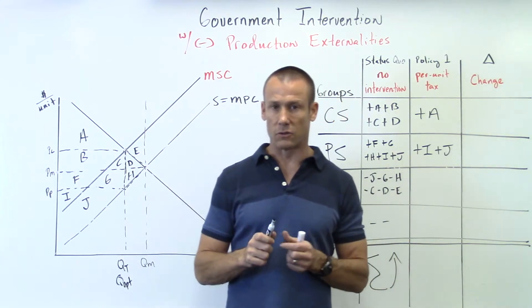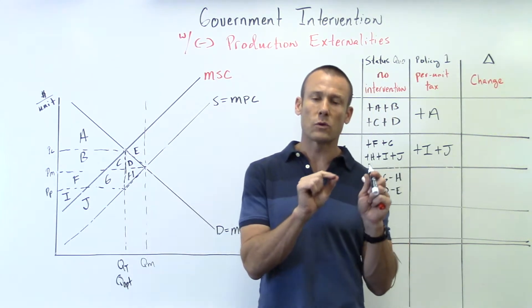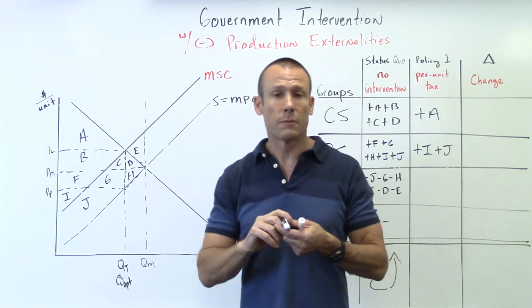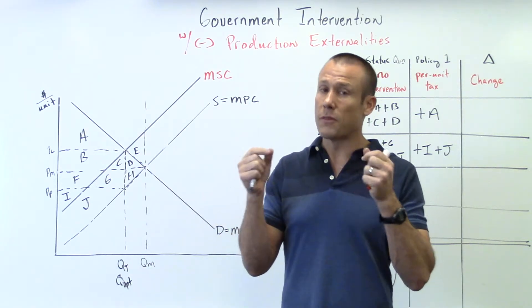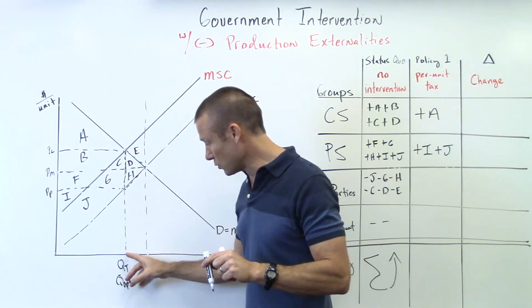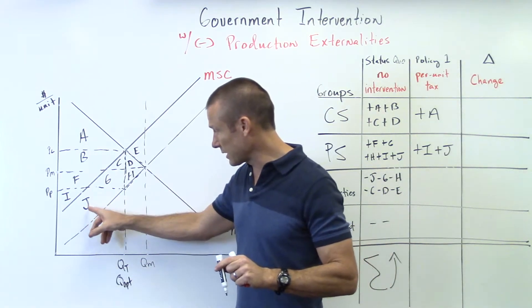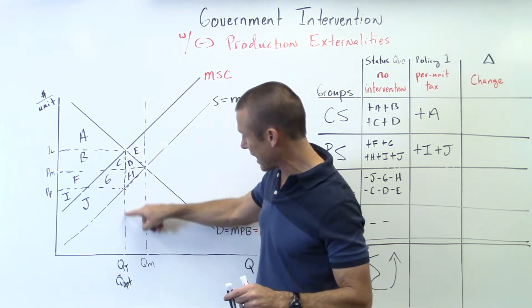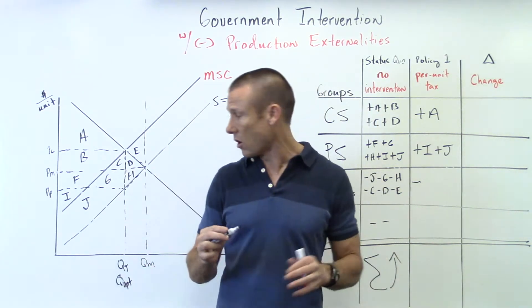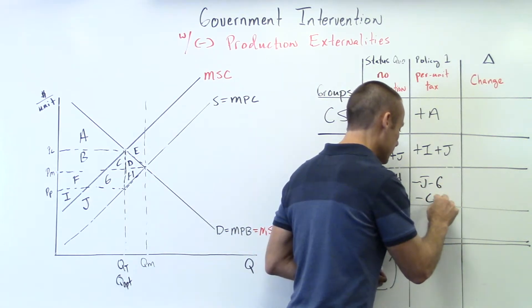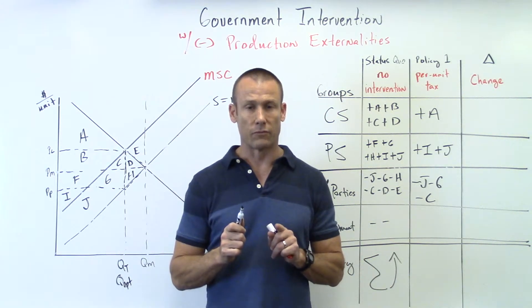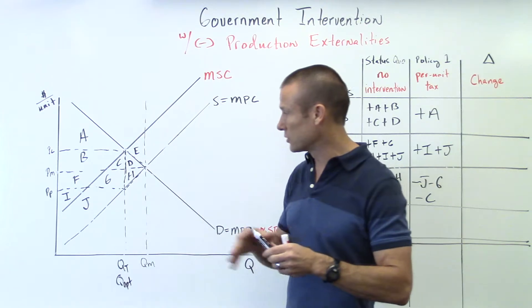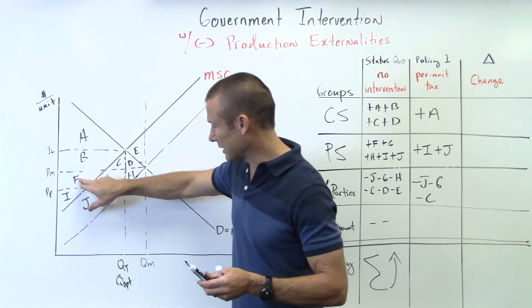Third parties are still going to be impacted. Yes, we're doing a tax and putting the burden onto producers and consumers, but if this is, say, pollution from production, the pollution is still happening. The good news is we've reduced output to Q-tax, so third parties aren't going to be impacted as much. They still get negative J, G, and C, but they're no longer getting negative D, H, and E. So it's negative J, G, C.